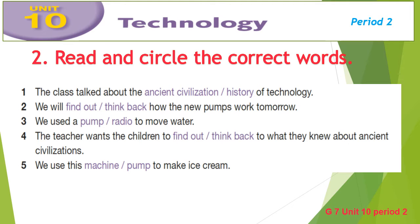Now exercise 2, page 5: Read and circle the correct words. In this exercise you have 5 sentences with 2 options for each sentence. You are going to read them and circle the correct word.